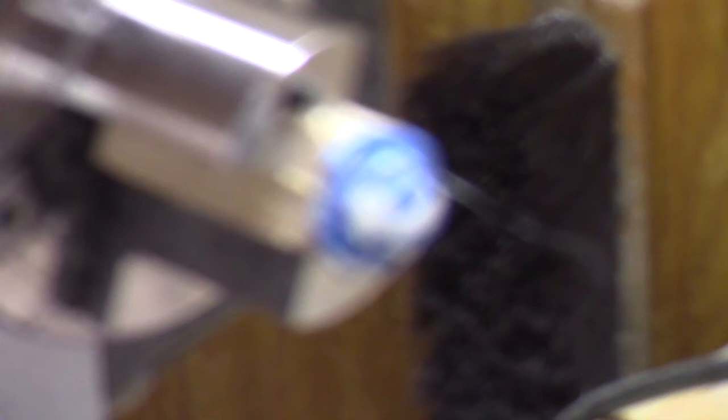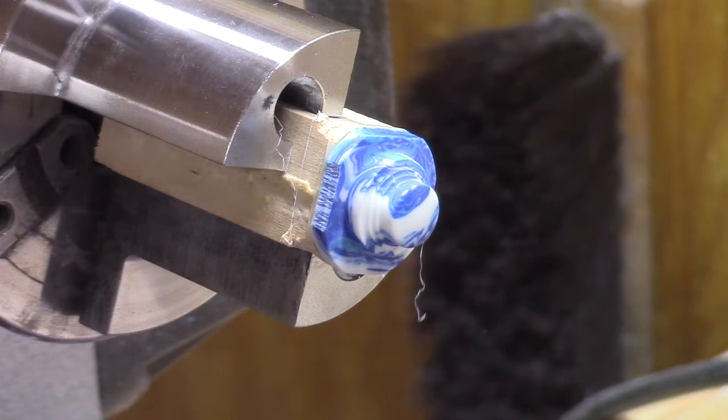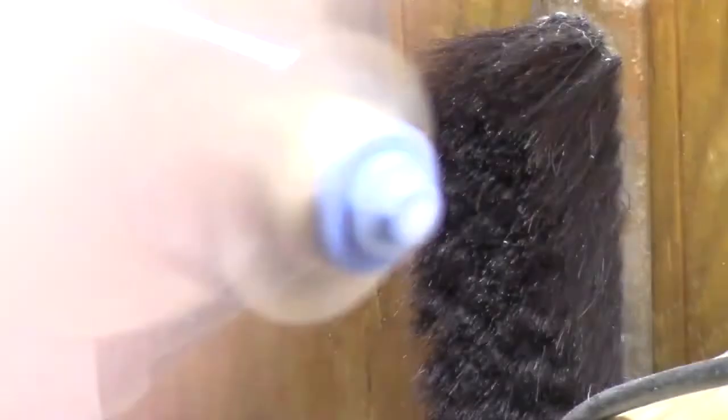I'm just going to take a paper towel, we're going to turn the lathe down low. Put a little drop on here, a short burst of glue dry. We'll put a couple on there.